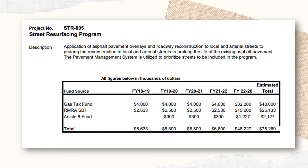I decided to focus on one of these street programs, which is a resurfacing program. This would prolong the life of the existing asphalt pavement by making improvements over 10 years. They utilize a pavement management system, or PMS tool, to help determine what streets will be involved. As you can see, there is a variety of funding sources being used, but for the purpose of this presentation we'll take a look at what some long-term debt options could be.